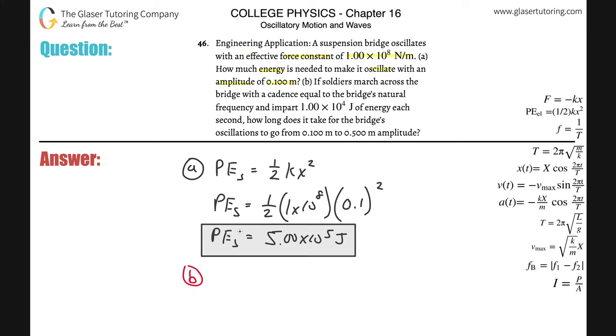Letter B now says if soldiers march across a bridge with a cadence equal to the bridge's natural frequency, and input 1 times 10 to the 4th joules of energy each second, how long does it take for the bridge's oscillations to go from 0.1 meters to 0.5 meters in amplitude? So basically, if the amplitude of the bridge's oscillation is changing, that must also mean that there is a changing energy.